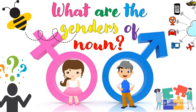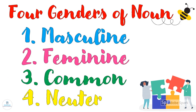What are the genders of noun? The four genders of noun are masculine, feminine, common, and neuter.